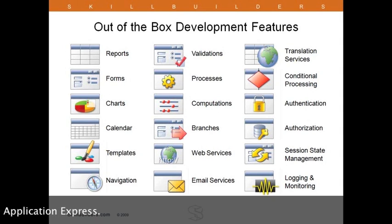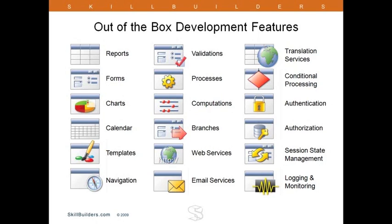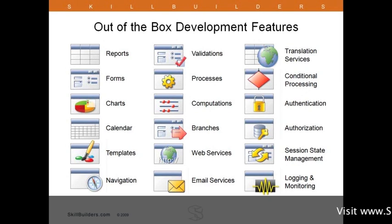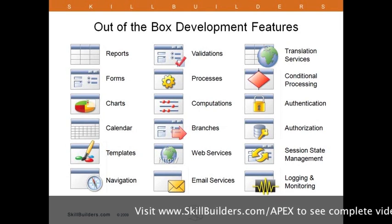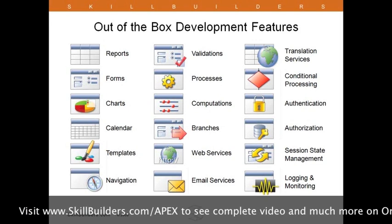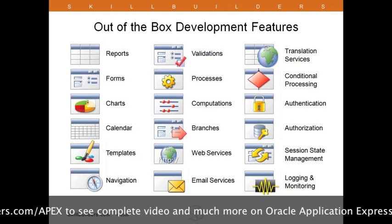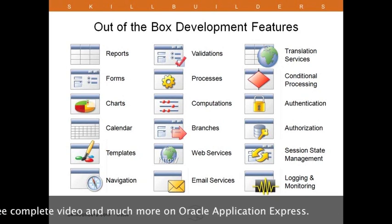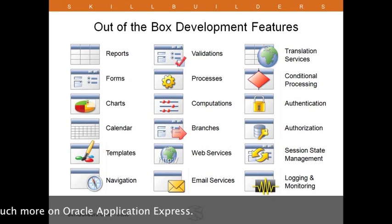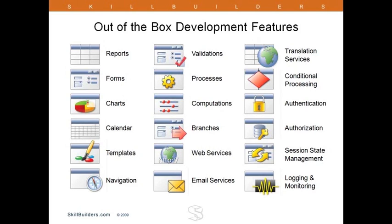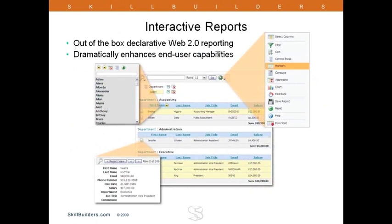Here we take a look at some of the features within APEX, divided into three main columns. Many RAD tools provide widgets such as reports and forms — the ability for users to view and manipulate data. A few even have features seen in the second column: validations help ensure that data going into the database conforms to business rules, and web services and email services are very important for any application involving workflow. But the third column includes translation services for running an application in multiple languages, authentication and authorization security built in, and access and state management logging and monitoring — all available out of the box.